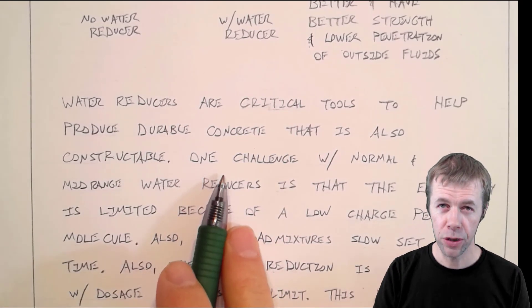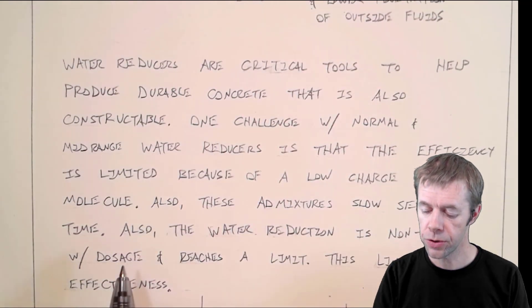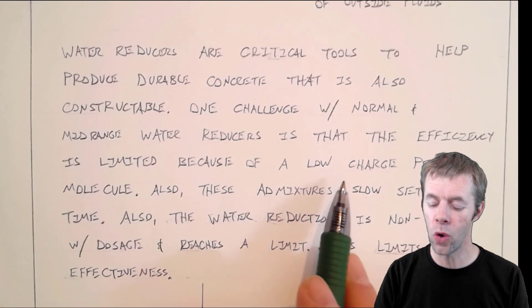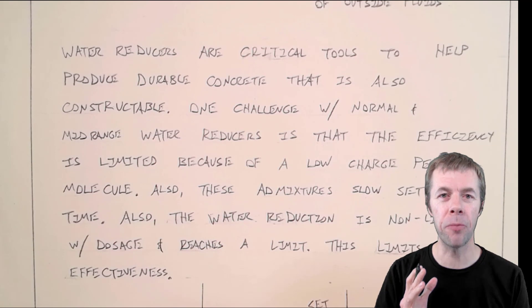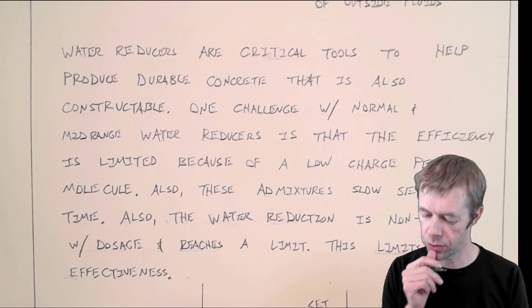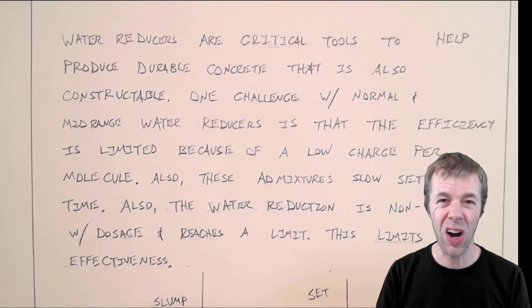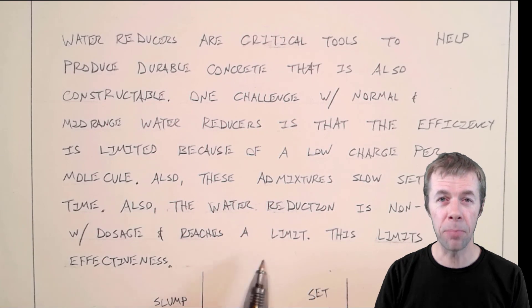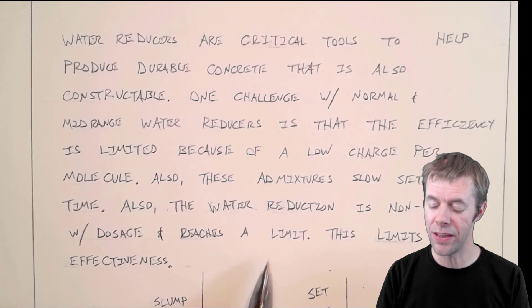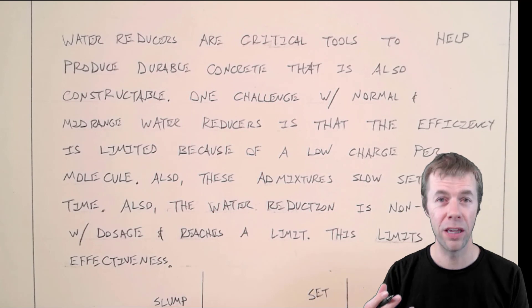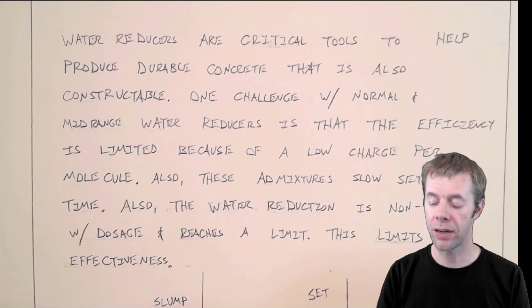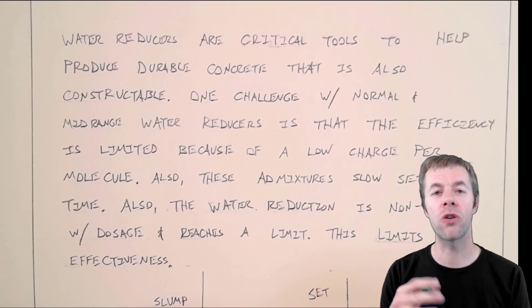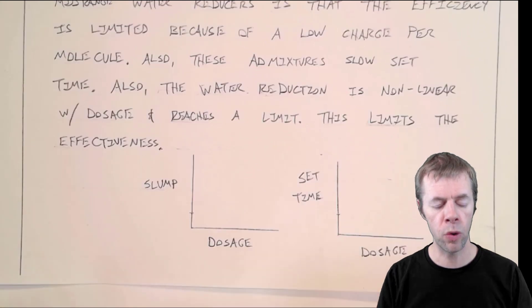One big challenge with normal water reducers is that the efficiency is limited because they're kind of a low charge per molecule. They're not really optimized to disperse cement grains. Also, the water reduction is nonlinear with dosage, so it's kind of hard to predict how things are going to perform. And it reaches a plateau or a limit. Another thing is that these things have a big impact on set time.